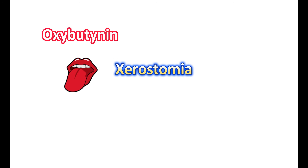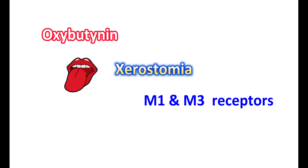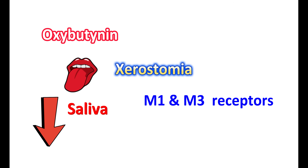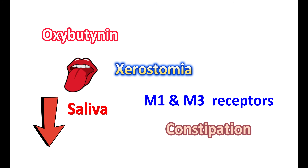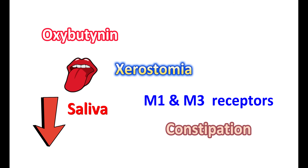Use of oxybutynin can produce a condition called xerostomia, leading to dry mouth. Since oxybutynin is an anticholinergic medication, it blocks cholinergic receptors — specifically both M1 and M3 muscarinic receptors — reducing saliva secretion from the salivary glands. Due to its anticholinergic actions, it can also reduce gastric motility, leading to constipation. Other side effects like headache and dizziness can also be observed.